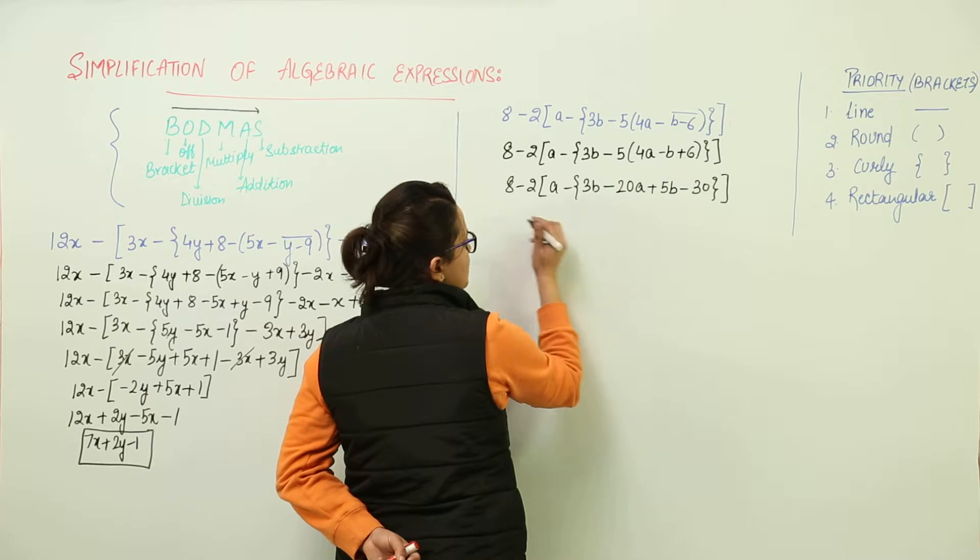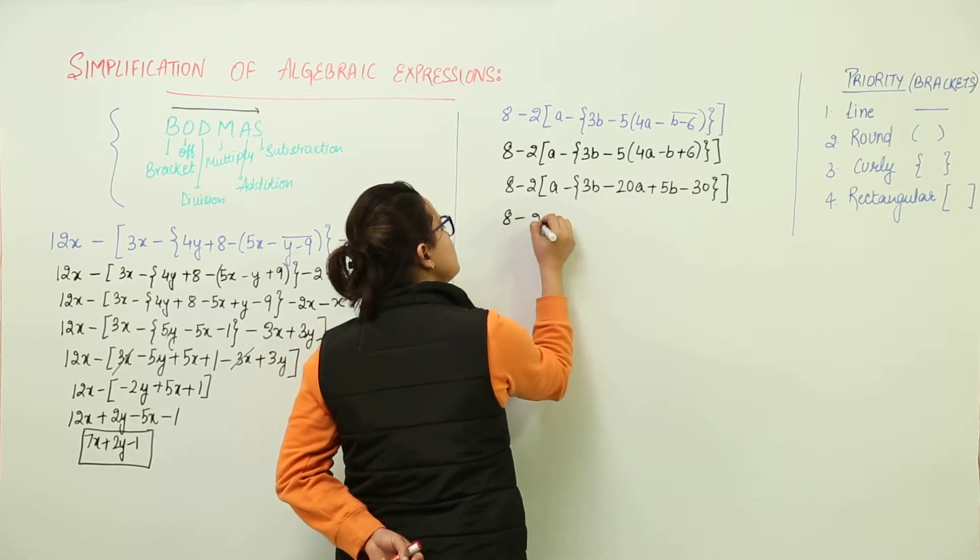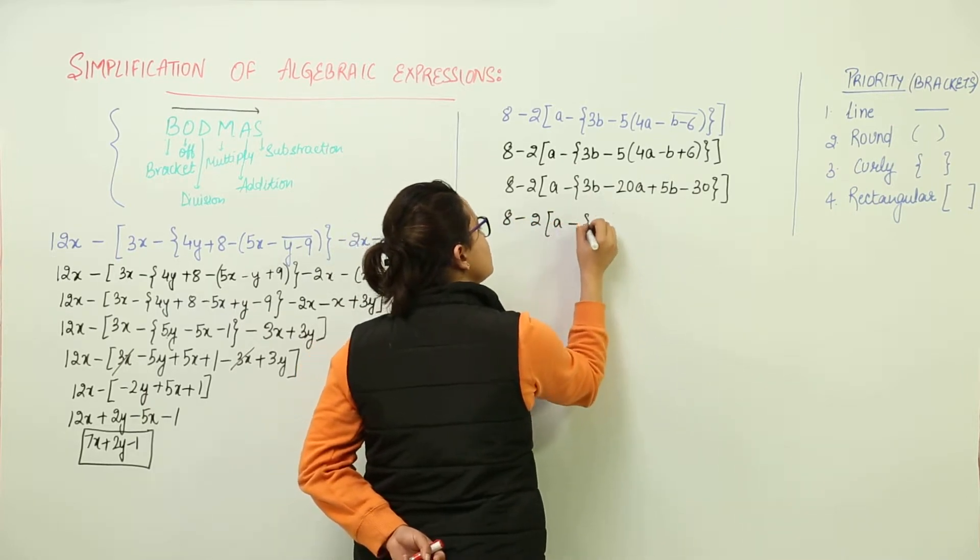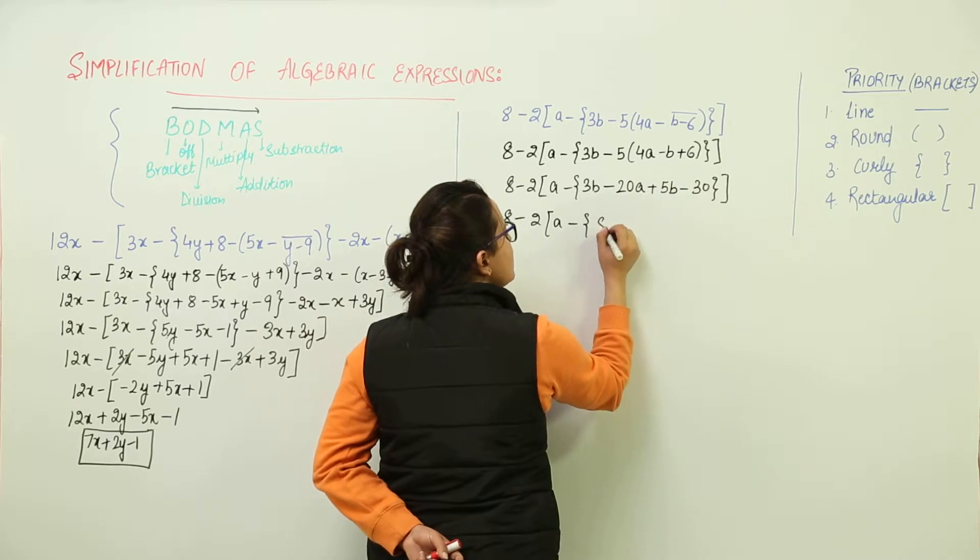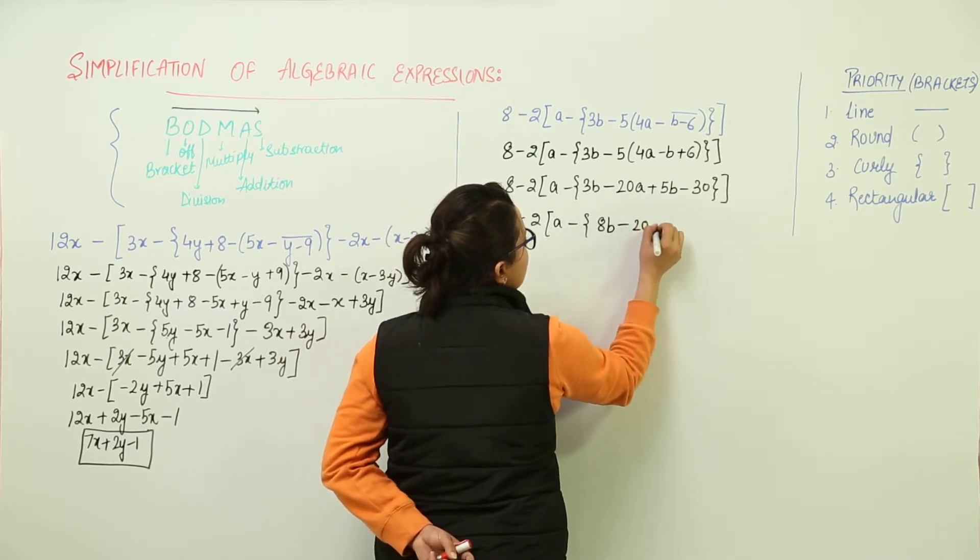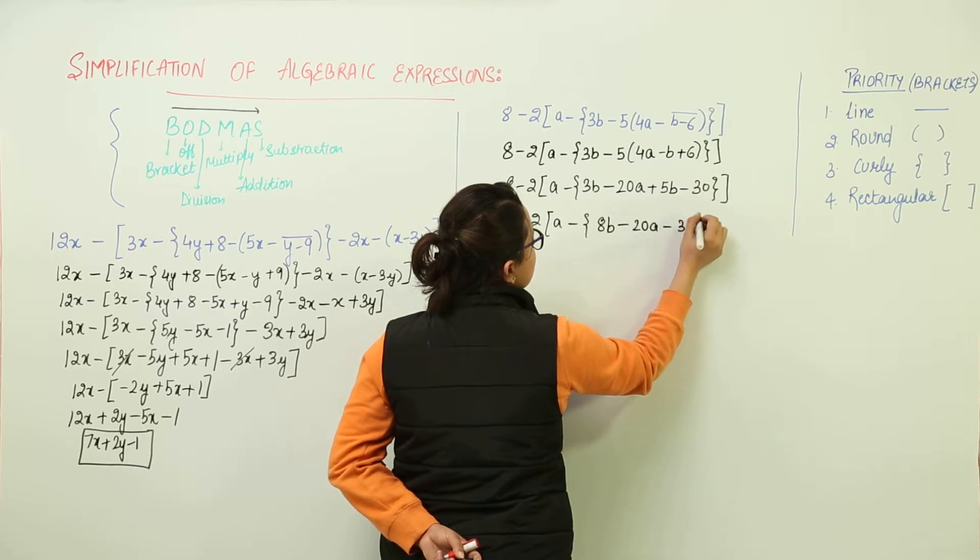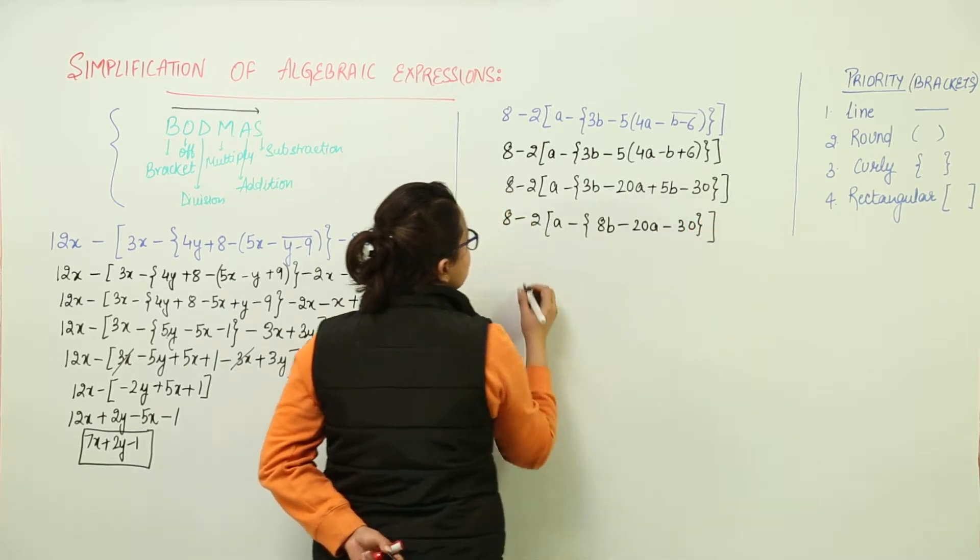If possible we can simplify this further. So let us do that. Minus 2a minus 3b plus 5b makes 8b minus 20a minus 30. So that was the simplification part.